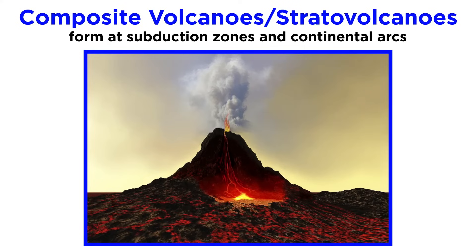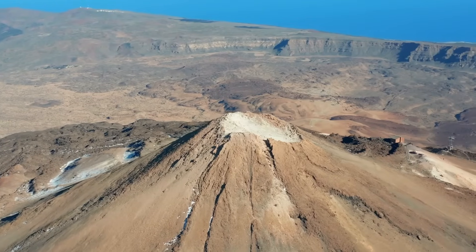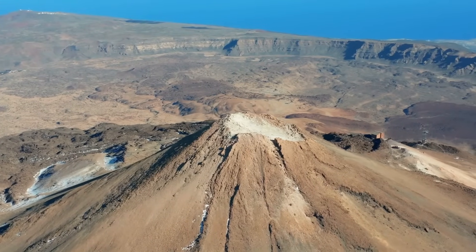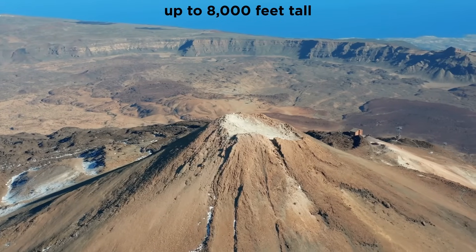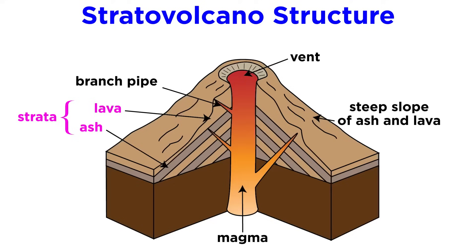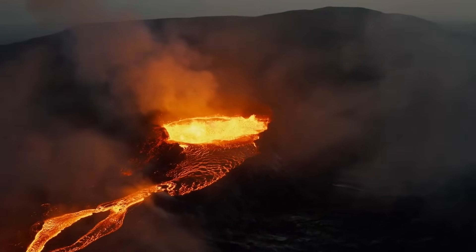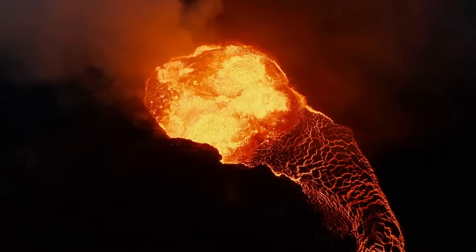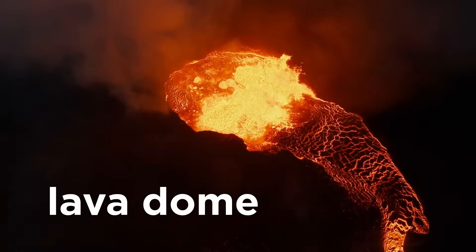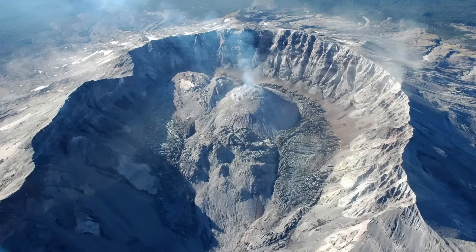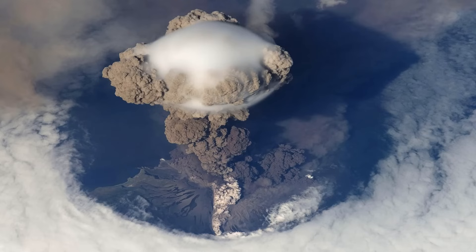Composite or stratovolcanoes usually form at subduction zones, especially continental arcs. When most people imagine a volcano, they are probably imagining a stratovolcano. Stratovolcanoes can rise as tall as 8,000 feet, with steep slopes up to 36 degrees. The name stratovolcano arises from its structure — alternating layers, or strata, of lava flows and tephra with a central vent. Though stratovolcanoes can produce lava flows, the lava they extrude usually just piles up atop the vent, forming a giant blob of viscous magma called a lava dome, which plugs up the volcano, leading to extremely explosive eruptions.